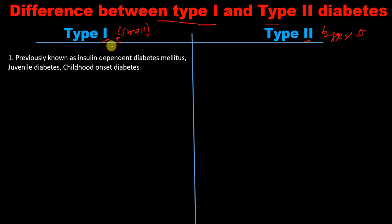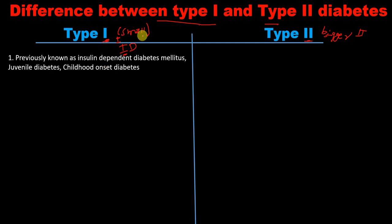The first difference: type 1 diabetes mellitus was previously known as insulin dependent diabetes mellitus (IDDM). The 'I' appears only once, just like in type 1. It's also called juvenile diabetes or childhood-onset diabetes, because children are small — just like the smaller number 1.